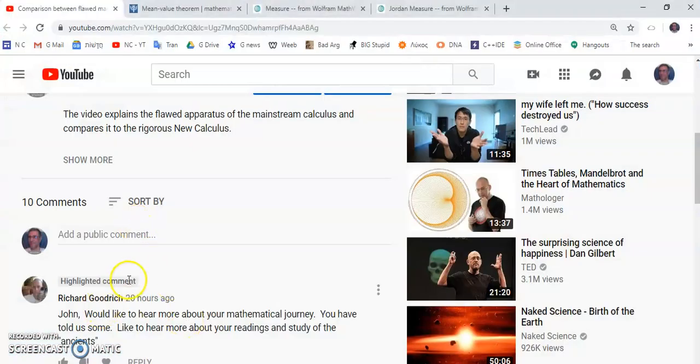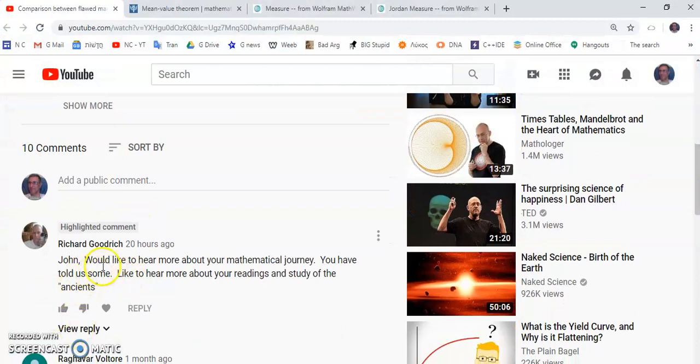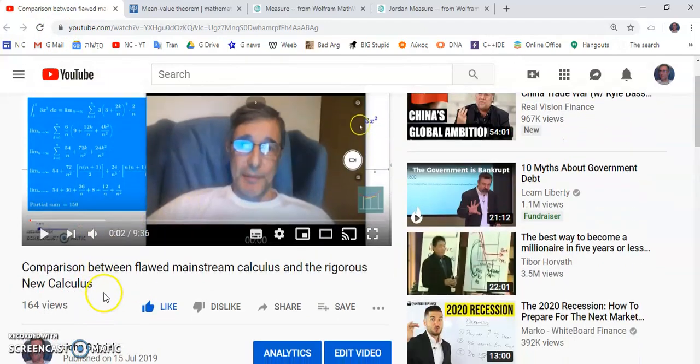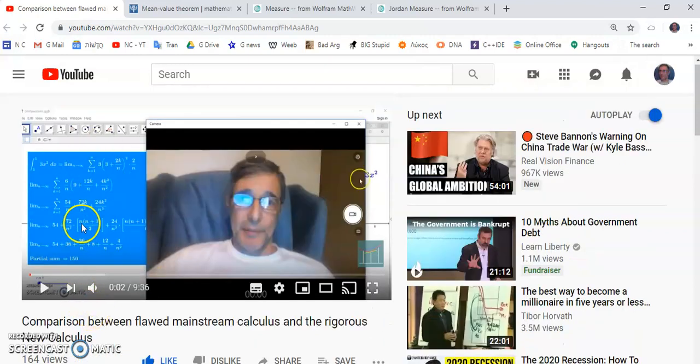In the comments section, Richard Goodrich said, John would like to hear more about your mathematical journey. You have told us some, and like to hear more about your readings and the study of the ancients. This was in response to the video comparison between flawed mainstream calculus and the rigorous new calculus. So I'm going to talk to you a little bit about this journey, and then explain some of the things that led to these new realizations and discoveries.